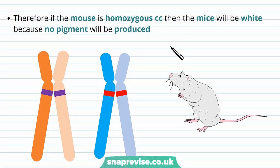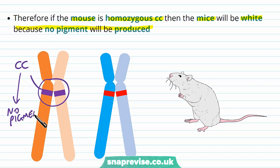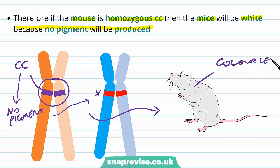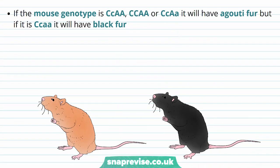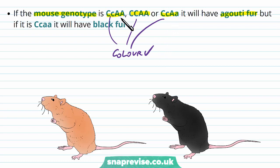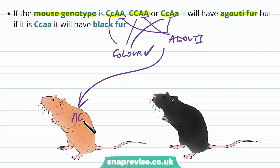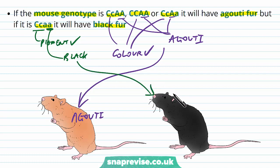Knowing this, you can work out different genotypes. If the mouse is homozygous little c, little c in the epistatic gene, the mice will be white because no pigment is produced — none of the hypostatic alleles will be expressed and we get a colourless white mouse. If the genotype is large C, little c with two big A's, or large C, large C with double A, or large C, little c with large A and little a, we get agouti fur — there's a large C allowing colour, and a large A giving agouti. But if the genotype is large C, little c with two little a's, it will have black fur: colour is allowed, but the two little a's give black only with no agouti.